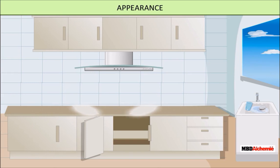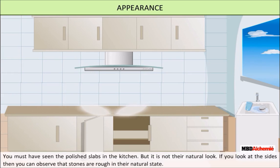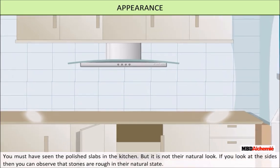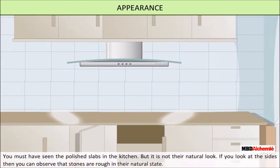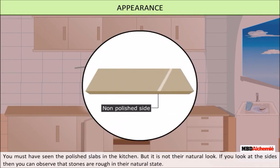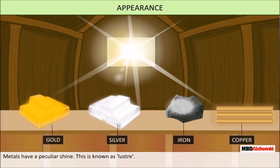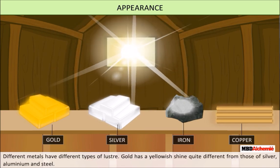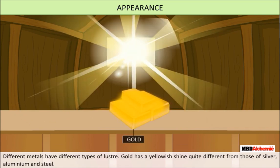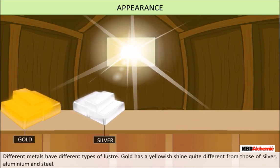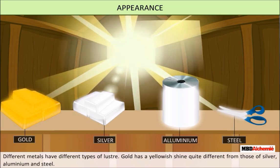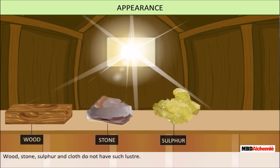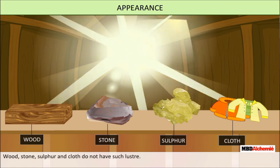Appearance. The appearance of a substance can be deceptive. You must have seen the polished stone slabs in kitchens, but that is not their natural look. If you look at the sides that are not polished, you can observe that the stones are rough in their natural state. However, metals have a peculiar shine known as luster. Different metals have different types of luster. Gold has a yellowish shine quite different from that of silver, aluminium, and steel. Wood, stone, sulphur, and cloth do not have such a luster.